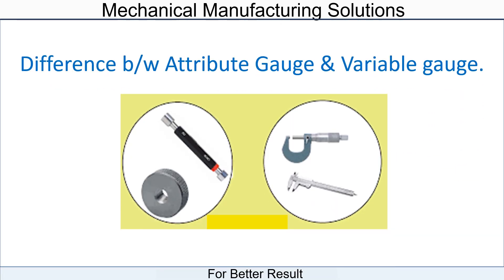Let's see the difference between attributed gauge and variable gauge. Attributed gauges include plug gauge, ring gauge, and snap gauges. Variable gauges include micrometer and vernier caliper.